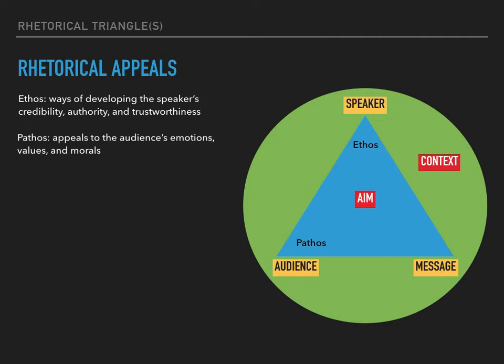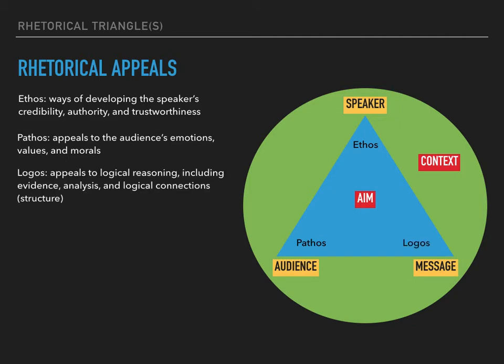The third type of rhetorical appeal is logos, and logos is tied most closely to the message itself. Logos is about the logical reasoning that underpins the message. While it can overlap with or draw on pathos, we mostly think about it in terms of the kinds of evidence a speaker uses, the kinds of analysis that they do, and the logical connections they make between their points or to build to their conclusions. In other words, sometimes logos is about structure.